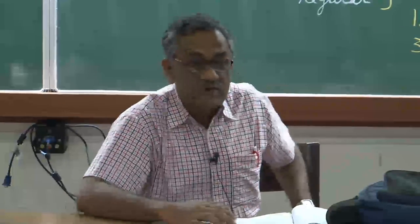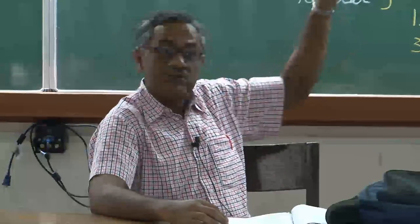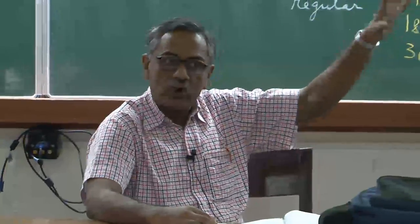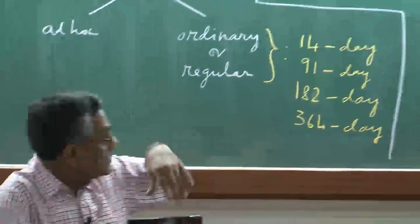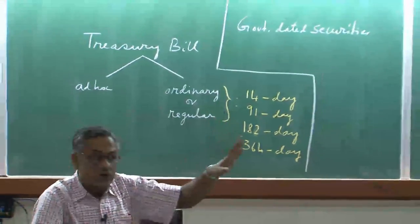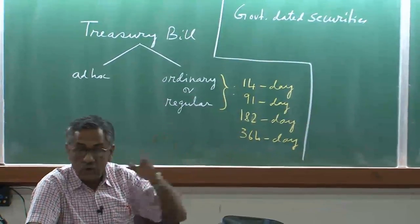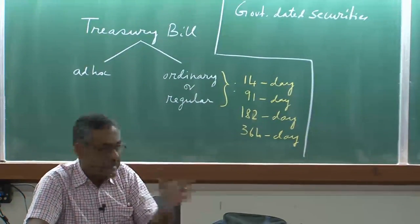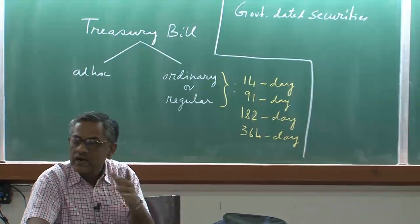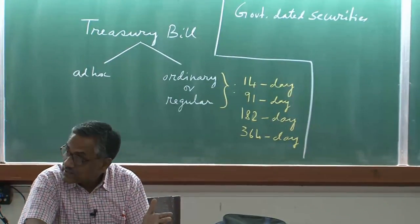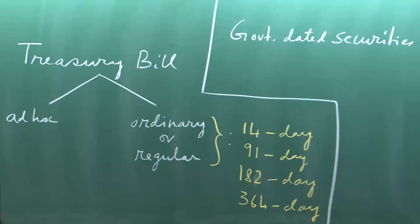Government dated securities are already a known thing in the market — they are borrowing on a long-term basis which they do not have to repay immediately, they have 3, 4, 5 years to repay. Then they have the regular bills already known in the market. So banks are lending to government, non-banks are lending, you and me are buying them, and RBI is of course there. In addition, ad hoc bills were still so important — meaning the Government of India was so much in financial trouble — that they could not phase them out.